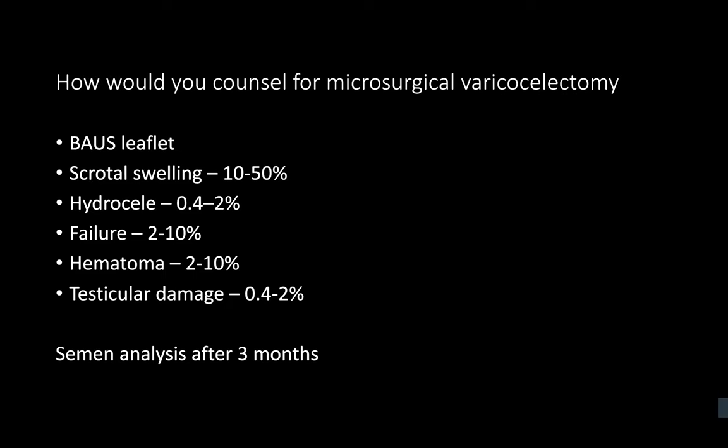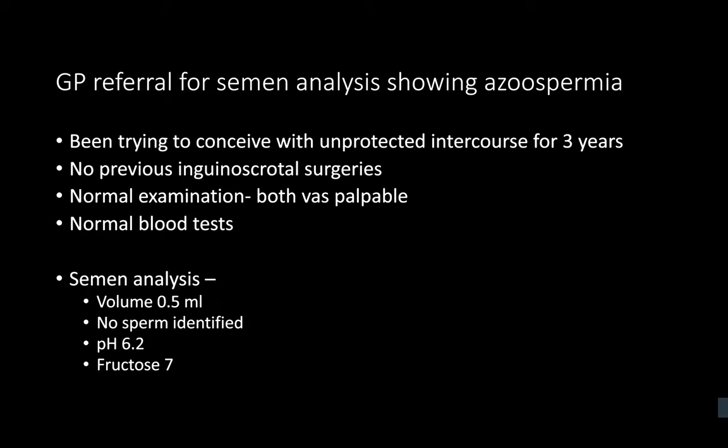New scenario: a GP referral for a couple where semen analysis shows azoospermia on two samples. They've been trying to conceive for three years. No previous inguinal or scrotal surgery. Examination is normal, both vasa are palpable. Semen analysis: volume 0.5 mL, no sperm identified, pH 6.2, fructose 7.